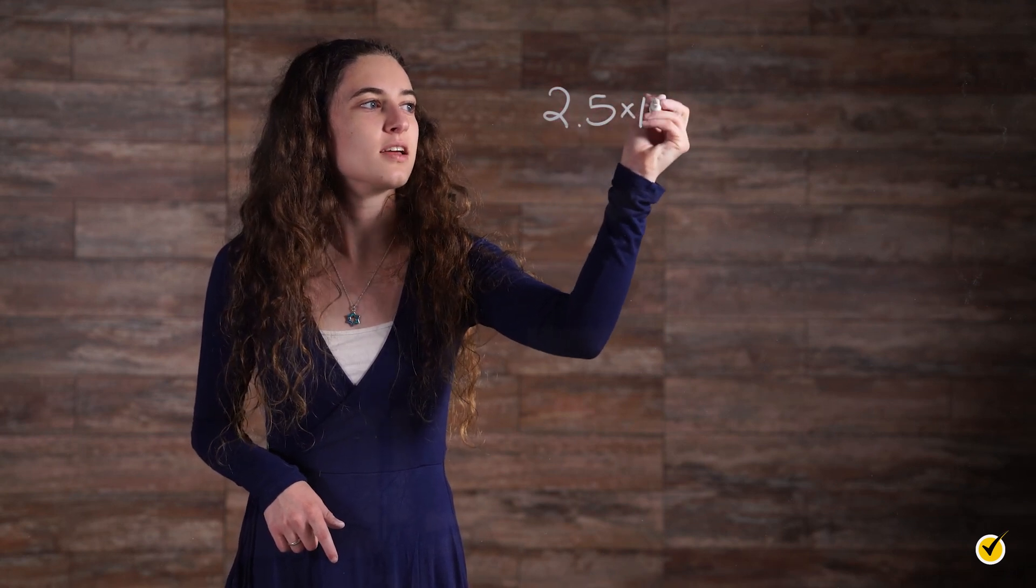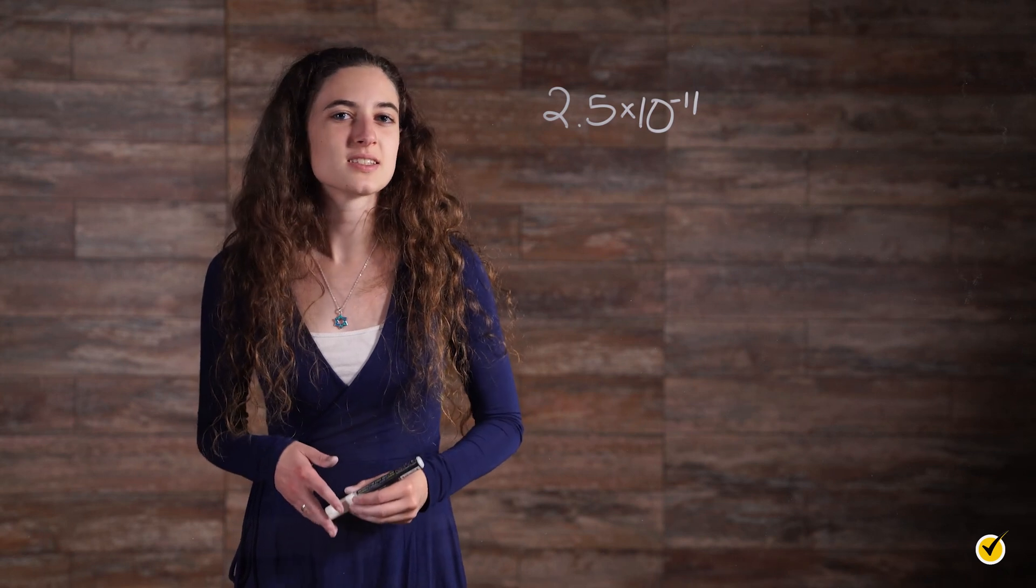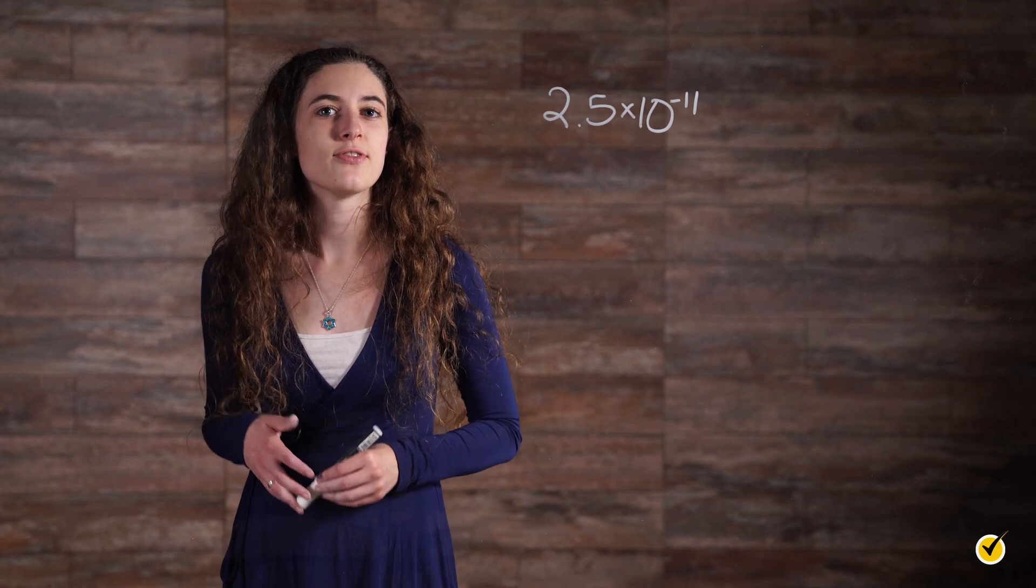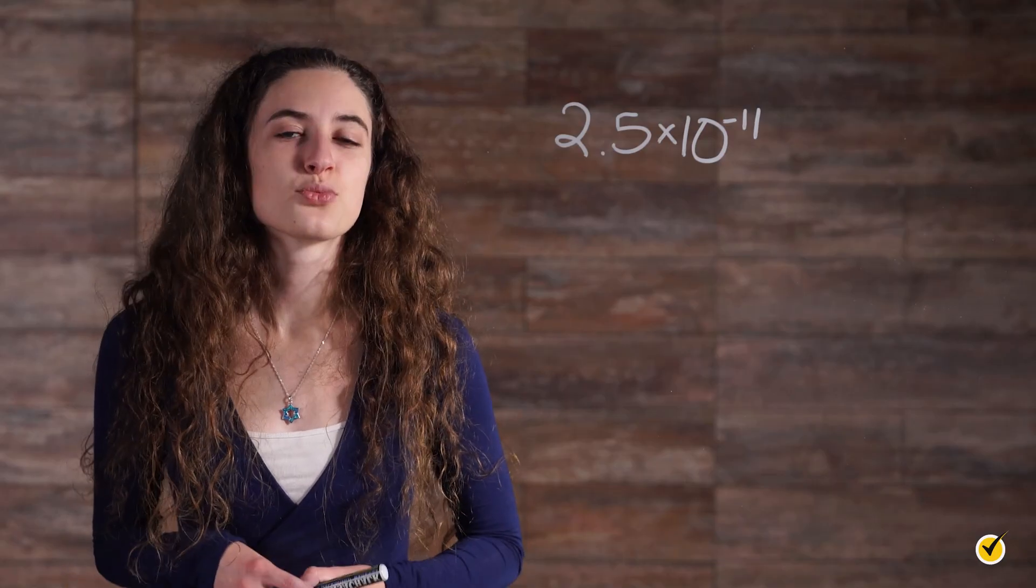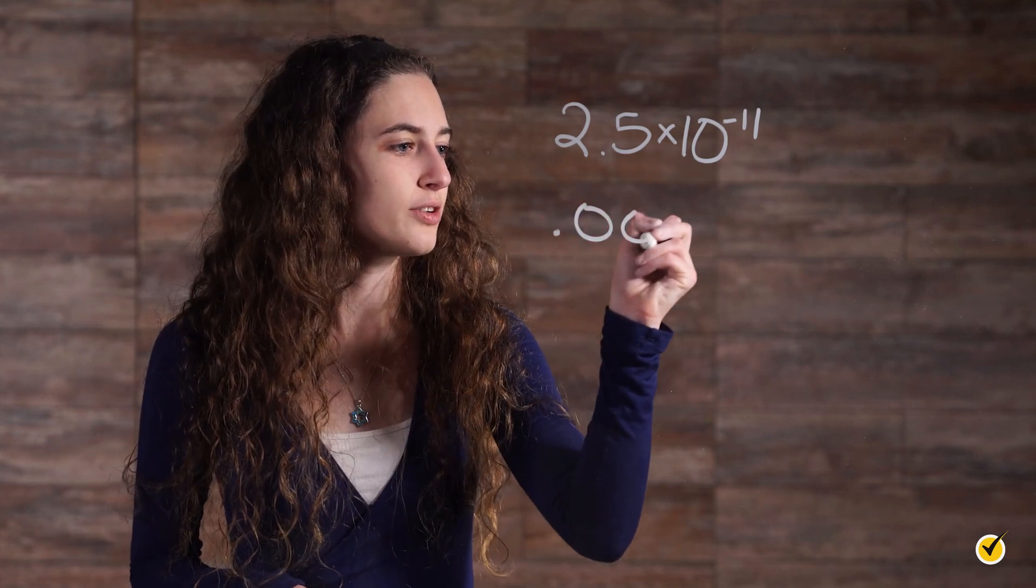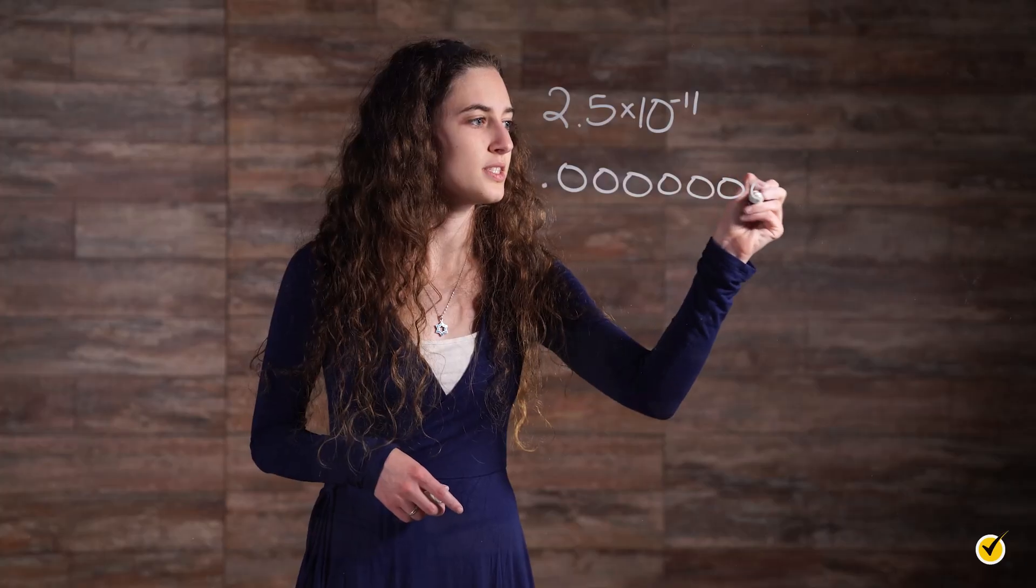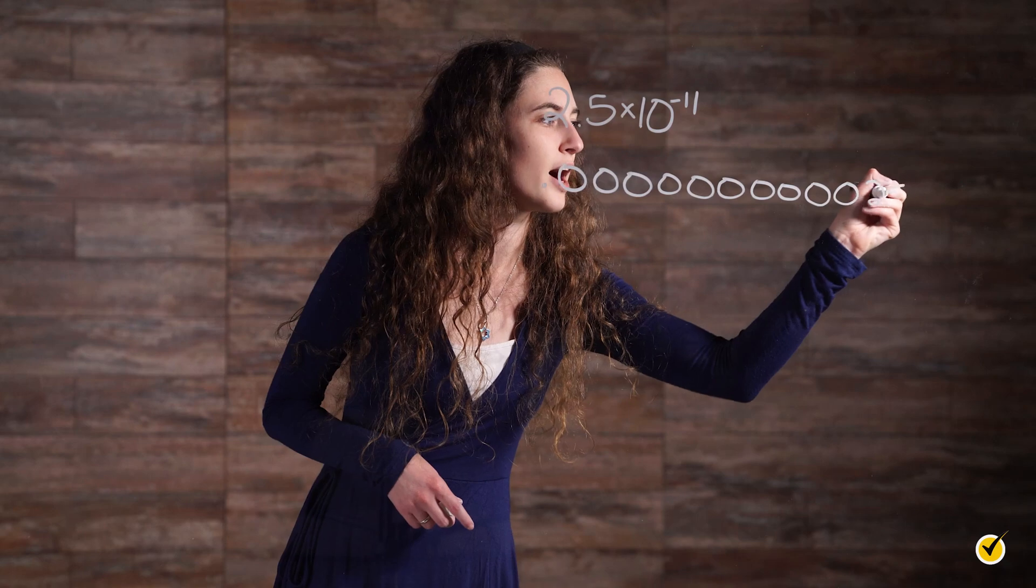The radius of a hydrogen atom is 2.5 times 10 to the negative 11th meters. We can express this in standard form by starting with the decimal part 2.5 and dividing by 10 a total of 11 times. This tells us that the radius of a hydrogen atom is 0.000000000025 meters.